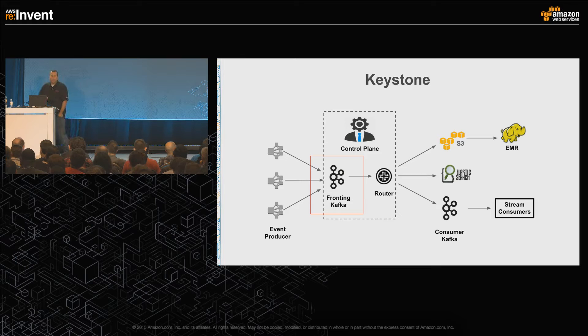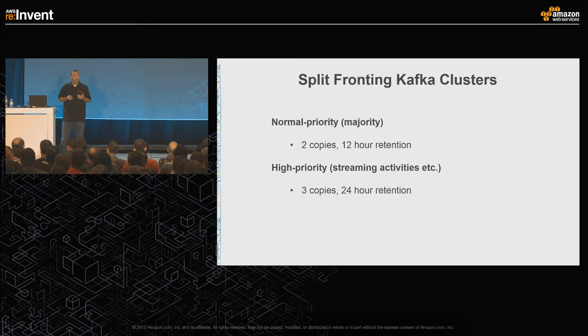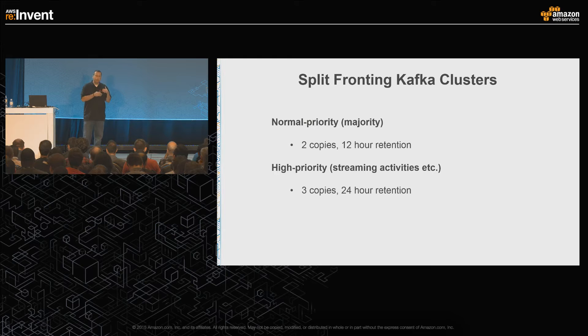Let's take a look at the first part of our infrastructure: the fronting Kafka. We've split it into two — normal priority and high priority. Normal priority is the majority of our events; we have two replicas and 12 hours of retention. On the high priority side, we have three replicas and 24 hours of retention. The reason for the difference in retention is what risk we're willing to tolerate if there's some downstream event. The entire intent of our fronting Kafka clusters is to essentially behave as a buffer — consume all the events thrown at you. If something happens with S3 or Elasticsearch or anything downstream, we have 12 to 24 hours to reconcile those issues before we start losing data.